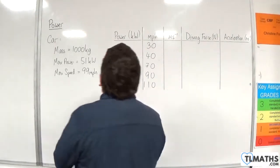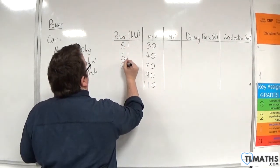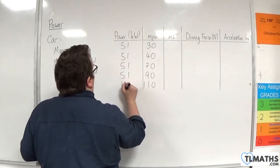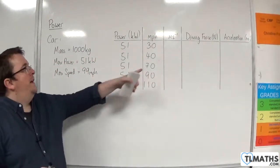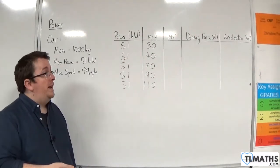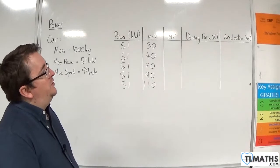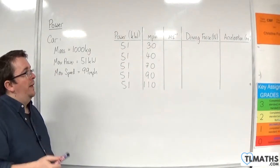The power output for all of these will be 51. We're going to look at what happens for the car when it goes through these speeds: 30 miles per hour, 40, 70, 90, and 110. And we're going to look at the car's acceleration at these speeds.